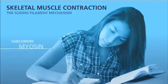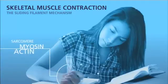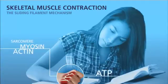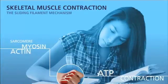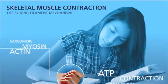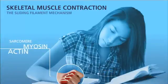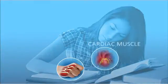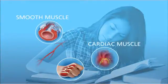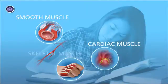You use muscles every day to do activities. This woman is using muscles to breathe, circulate blood, and move her hand to take notes. Your cardiac and smooth muscle tissues are involuntary — you do not consciously control their actions. Skeletal muscle, however, works under voluntary control.